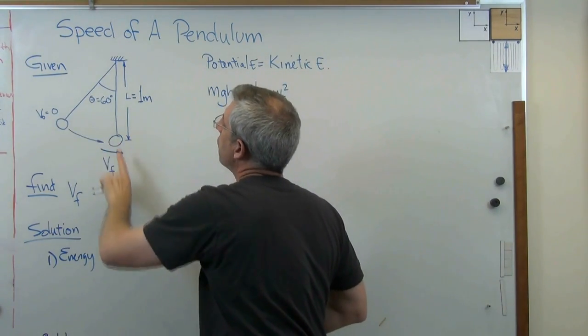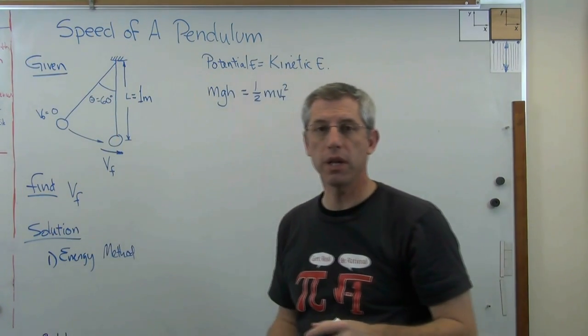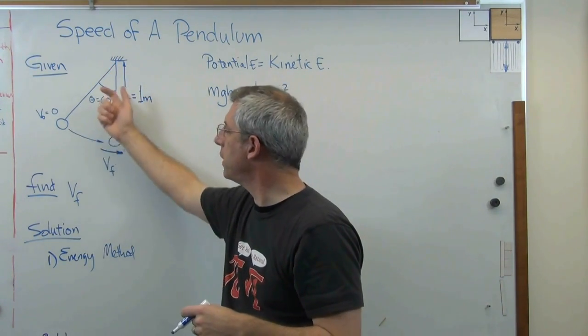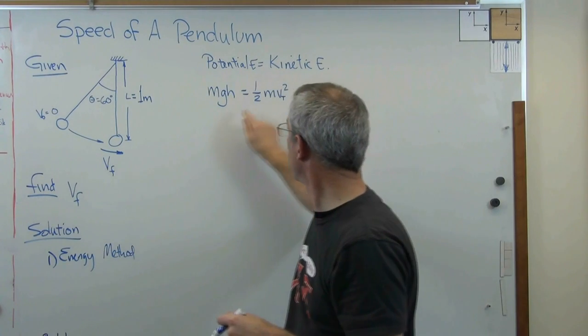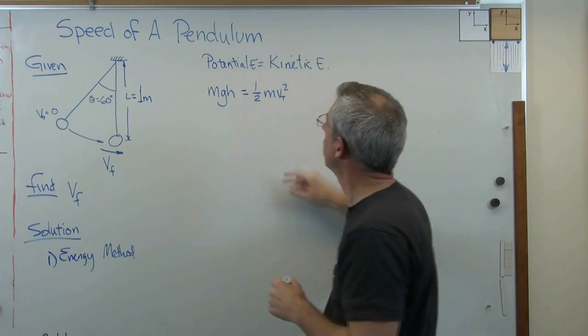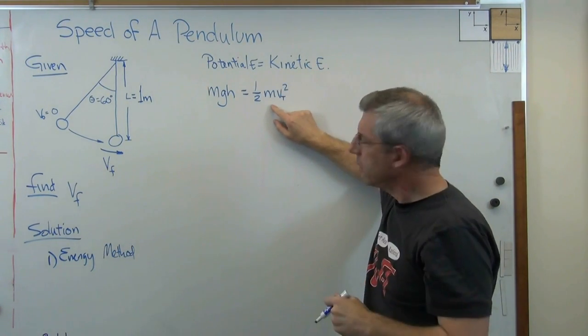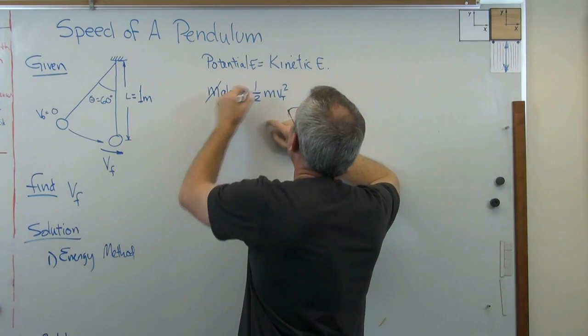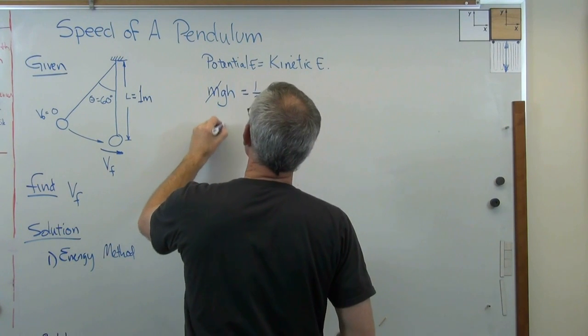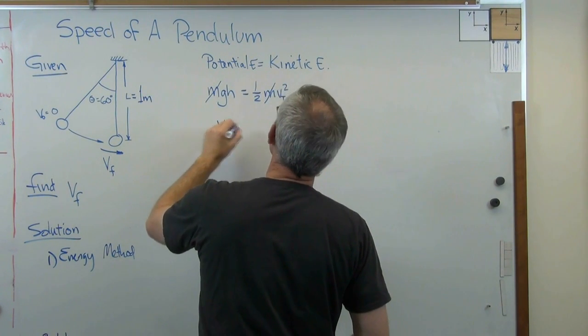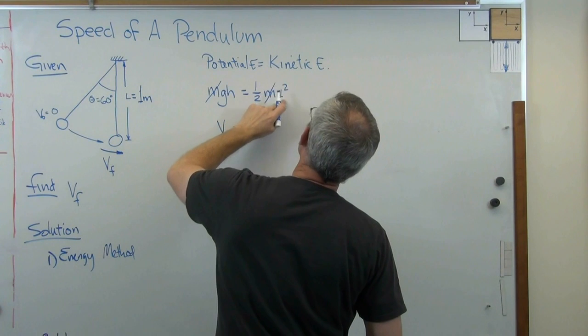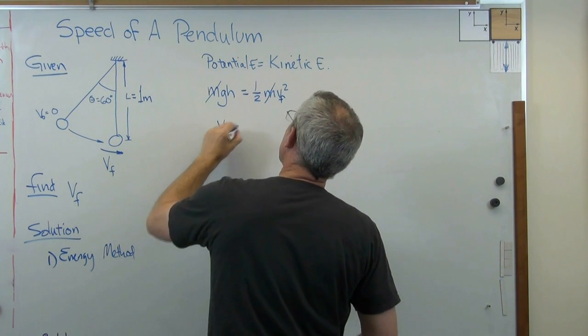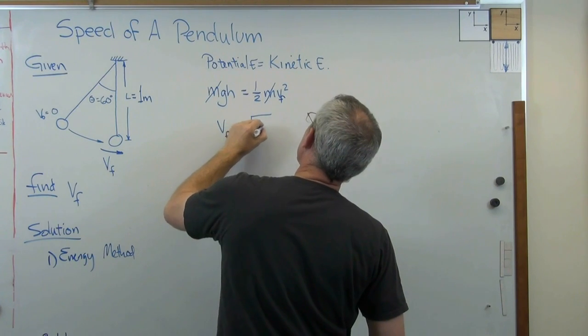The potential energy is mgh and the kinetic energy is one half mv squared. And this is v in the tangential direction. That's tangential, that's radial. If the velocity component is pointed at the pivot, that's radial. If it's perpendicular to that line, it's tangential. We're working with tangential velocity. Mass shows up on both sides of this, so I can divide it through. If I solve this, my tangential velocity, and this is really v final, is the square root of 2gh.